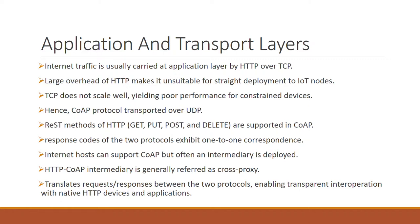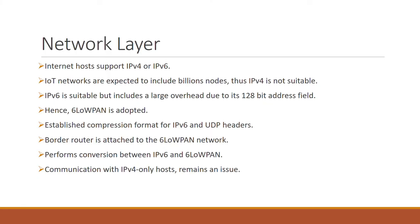CoAP handles unicast transmissions to provide a reliable service. CoAP can also easily interoperate with HTTP because it supports the REST method, supports a wide range of HTTP scenarios, and there is a one-to-one correspondence between the response codes of the two protocols. As for the network layer, IoT networks are expected to include billions of individually addressable nodes. IANA has recently announced the exhaustion of IPv4 addresses. The solution is IPv6, which provides a 128-bit address field. However, IPv6 introduces overheads incompatible with constrained nodes, which can be overcome by adopting 6LoWPAN, an established compression format for IPv6 and UDP headers over low-power constrained networks. A border router can transparently convert between IPv6 and 6LoWPAN, though communication with IPv4-only hosts remains an issue.